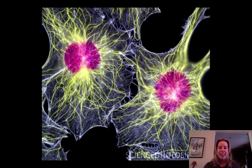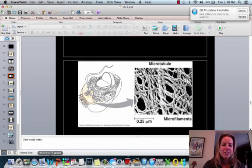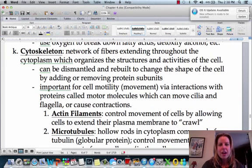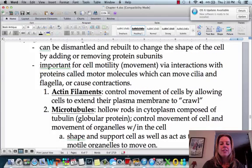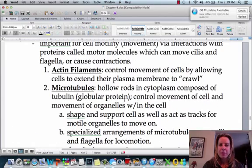What's really cool is that it can actually be dismantled and then rebuilt so that the cell can actually change shape and move from place to place. So let's go back to your notes. So it's going to be composed of three things, actin filaments, microtubules, and then your intermediate filaments.